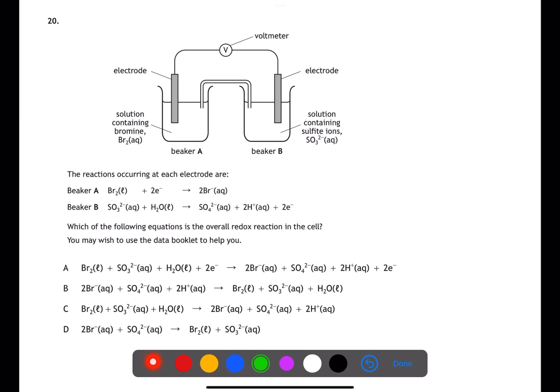For question 20, use page 10 of the data book to confirm that the equations you've been given are in the correct orientation. You should have the more reactive equation flipped over, which in this case is sulfite, and it has been flipped over. Next, check that you have the same numbers of electrons in each equation and that they're on opposite sides, which they are.